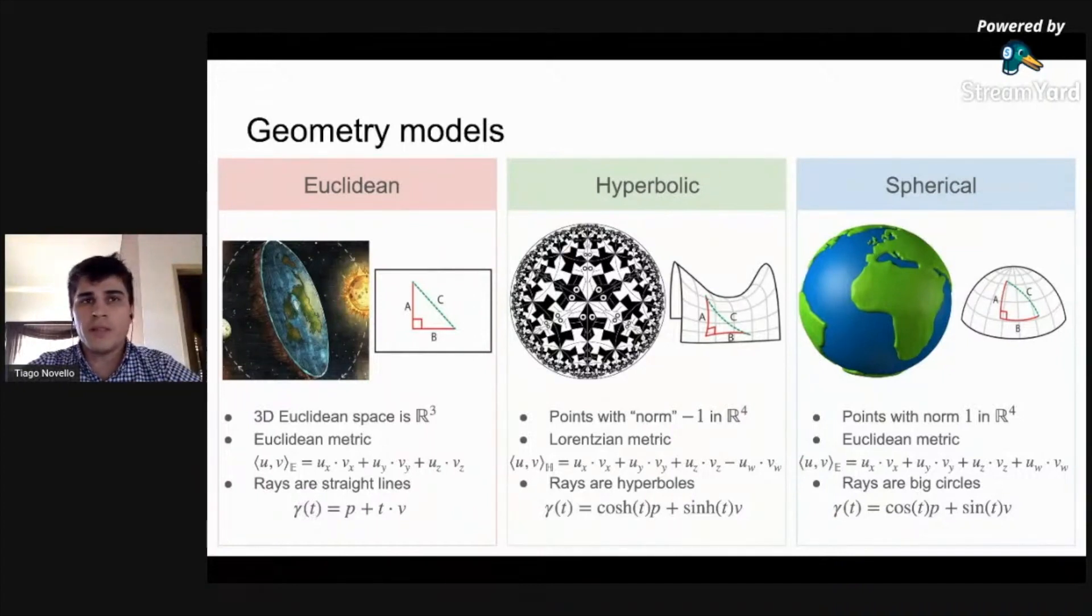On the right, the spherical space is the set of points in four-dimensional vector space with the Euclidean norm equals to one. Rays in this geometry are bigger circles and the triangles are fat.